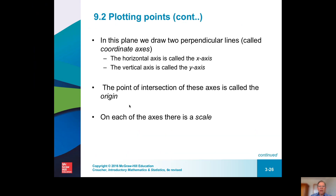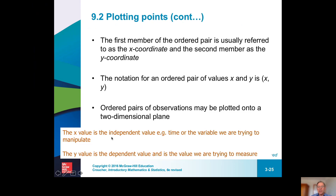The x-axis is independent. For example, if we were measuring a dose of medicine and its effect on a patient's symptoms, the symptoms go on the y and the dosage goes on the x — we manipulate the dosage and measure the effect. So y becomes dependent on x: as x changes, we measure the change in y.